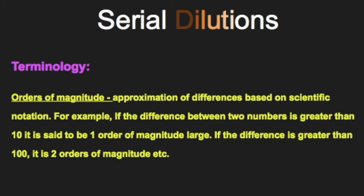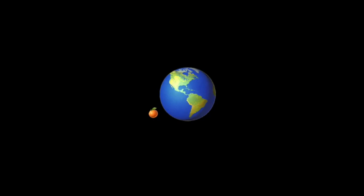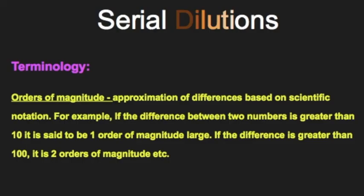Another terminology is orders of magnitude. So here's an explanation I liked from Wikipedia. If we were to compare the surface of an orange to that of the surface of Earth, I would say the Earth is many, many orders of magnitude larger than an orange. So orders of magnitude is an approximation of differences and it's uniquely used when doing scientific notation. If the difference is greater than 10, it is one order of magnitude larger. If it's greater than 100, it is two orders of magnitude. If it's three orders of magnitude, it's a thousand times larger. So differences that are on the same order of magnitude are less than tenfold.